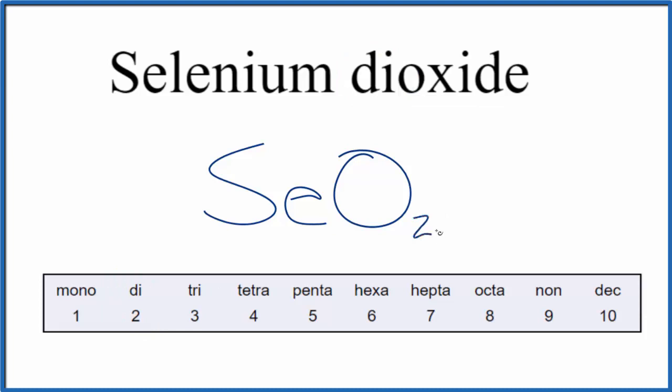The formula for selenium dioxide is SeO2. If you are given the formula SeO2 and asked to write the name, you know you have two nonmetals so you need prefixes. We write selenium and we don't write anything in front of the first element if there's only one, we just leave it as selenium.